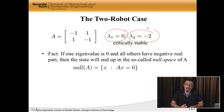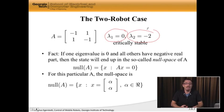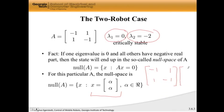That's where you're going to end up. So you're going to end up inside this thing called the null space of A, in this case, because you have one zero eigenvalue and all others having strictly negative real part. And if you type null A in MATLAB, you find that the null space for this particular A is given by x is equal to alpha alpha, where alpha is any real number. And why is that? Well, if I take negative one, one, one, negative one, this is my A matrix, and I multiply this by alpha alpha, what do I get? Well, I get minus alpha plus alpha here, and then I get plus alpha minus alpha there, which is clearly equal to zero. So this is the null space.